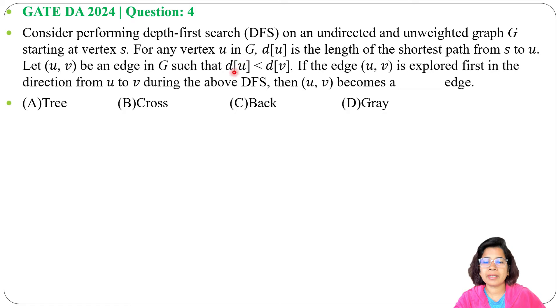Let (u, v) be an edge in G such that d[u] is less than d[v]. If the edge (u, v) is explored first in the direction from u to v during the above DFS, then (u, v) becomes a dash edge.